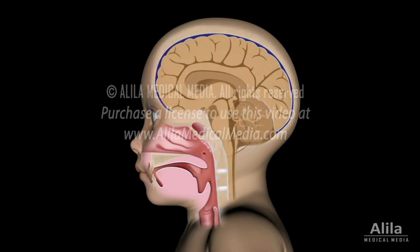Swallowing involves over 20 muscles of the mouth, throat, and esophagus, which are controlled by several cortical areas and by the swallowing centers in the brainstem. The brain communicates with the muscles through several cranial nerves.